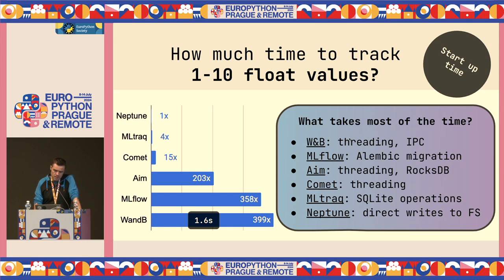Weights & Biases threading and IPC is quite slow in the way it is handled — threads and how locks are managed contribute to the latency. The fastest is Neptune, which basically writes directly to the file system, doing very little overhead. The least you do, the fastest you are. For others, it's either writing to a database or dealing with database overhead. MLflow, interestingly, even if the database doesn't exist yet, insists on doing a complete Alembic migration with all the schema changes.